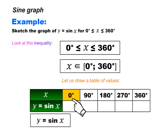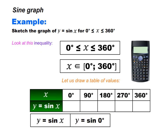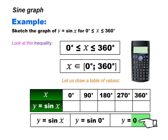Look at 0 degrees. In the place of x, we are going to put 0 degrees, so we have y is equal to sin 0 degrees. Using a calculator, we see that sin 0 degrees is equal to 0. So this means y is equal to 0. Let us put 0 in the second column just under 0 degrees.